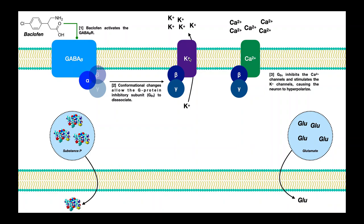Whereas the voltage-gated potassium channels are at the level of the soma and dendrites, and by stimulating these and facilitating potassium efflux, we're actually hyperpolarizing the entire neuron. So for voltage-gated potassium channels: hyperpolarize the entire neuron; by inhibiting voltage-gated calcium channels: inhibit exocytosis. We have a dual additive effect when we use baclofen.